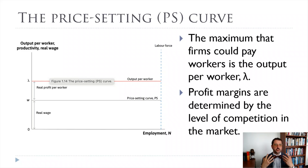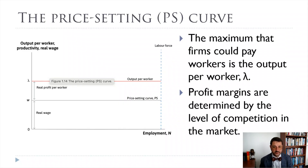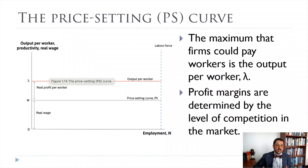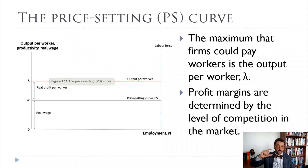Physical capital is like the machines, the factories, the tools. Technology is how they put all those things together to produce output. Human capital is all the skills, education, and experience that workers have that make them more productive. That determines our output per worker. Profit per worker gets determined on the microeconomic side — that's the marketing department figuring out whether increasing the price raises or lowers profits. It comes down to how much market power firms have. The more market power they have, the higher the profit margin, so the real wage gets pushed down. The lower the market power, the lower the profit margin, and the real wage gets pushed up.